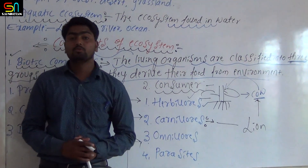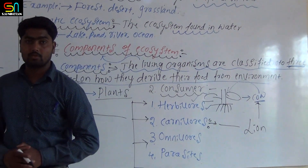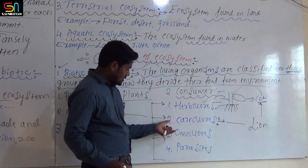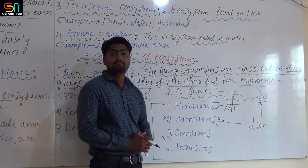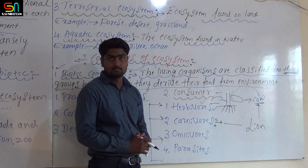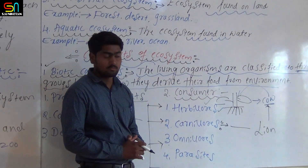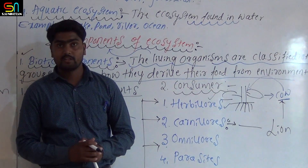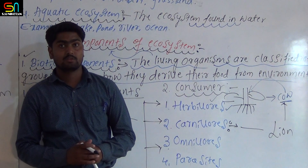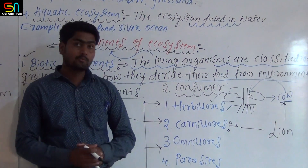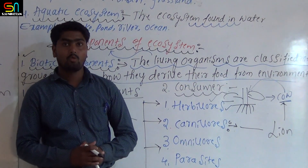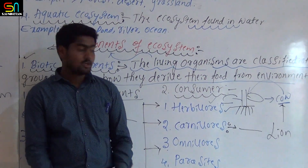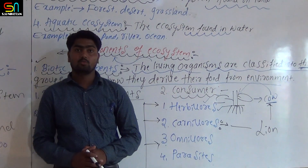Third category: omnivores. Omnivores are organisms which feed on both plants and animals. Examples include human beings, cats, and dogs.